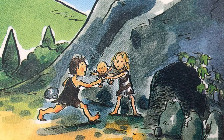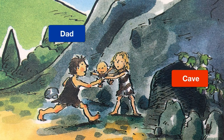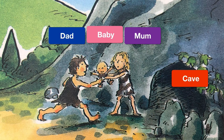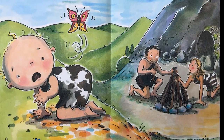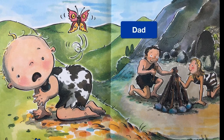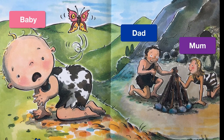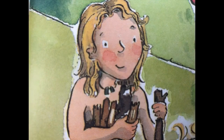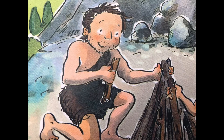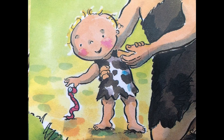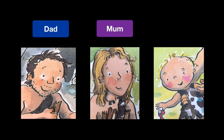Caveman, caveman lives in a cave. Dad, mum and baby. Every day they work and play. Dad, mum and baby. Mum collects the firewood. Dad makes the fire. Baby plays with a worm. Dad, mum and baby.